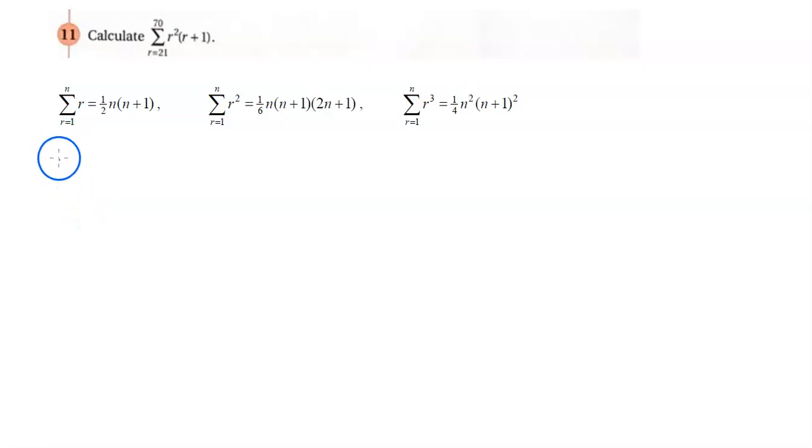Exercise set 3.1b, problem 11. Calculate the sum from r equals 21 to 70 of r squared times r plus 1. I've included these formulae from the formula sheet that you will get in your exam to make life easier.